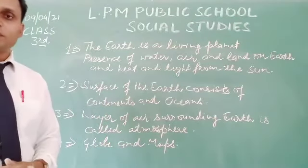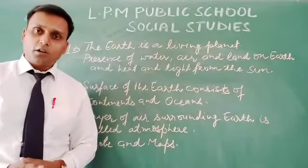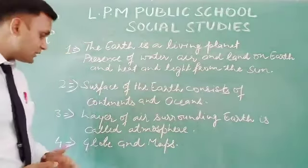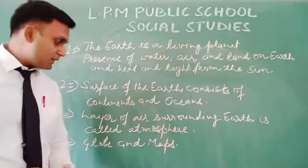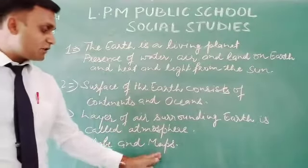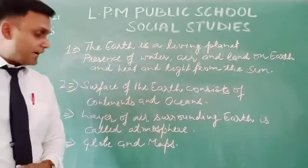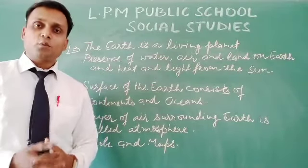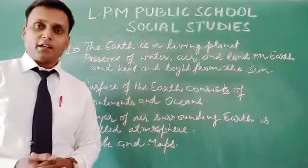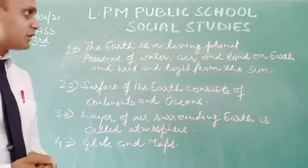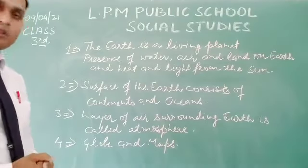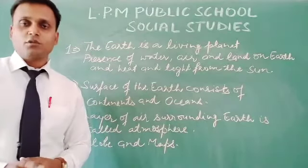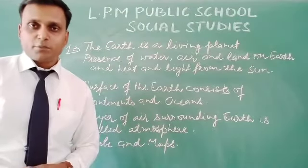The fourth point covers globe and maps, also discussed thoroughly in previous videos. A globe is a spherical representation — a model — of the Earth, showing exactly how places are located. A map is also a representation of the Earth but on a flat surface, showing details of particular places in greater detail. These are the points from the chapter summary. I hope you have learnt many things from these videos and that they have been helpful. Thanks for your support, and thank you so much.